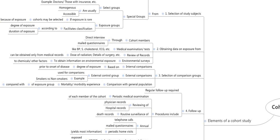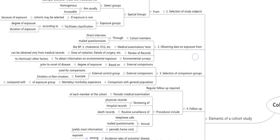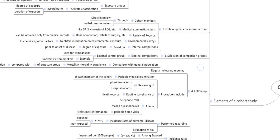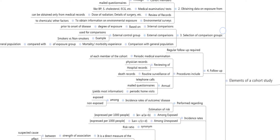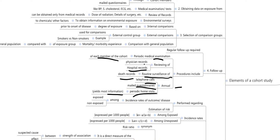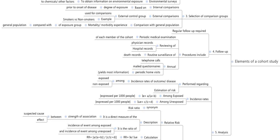The next step is follow-up. Regular follow-up of these persons is required. Procedures include periodic medical examination of each cohort member, review of physician and hospital records, routine surveillance of death records, annual telephone calls, mailed questionnaires, and periodic home visits. Periodic home visits yield the most information because we are visiting participants directly and asking questions.